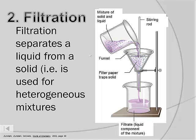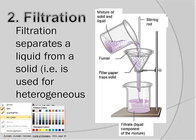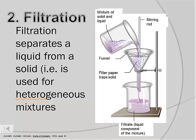The second method is filtration. Filtration separates a liquid from a solid, in other words it can be used for specific kinds of heterogeneous mixtures. Remember from when we defined them right at the beginning of the unit, heterogeneous means more than one visible component. You can actually see physical differences in the material. Hetero as a root means different, so heterogeneous means different forms.